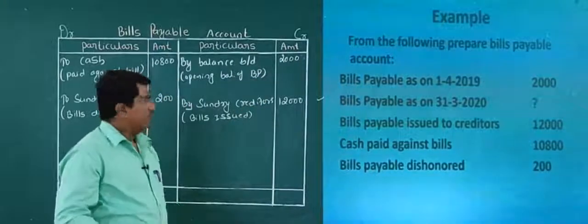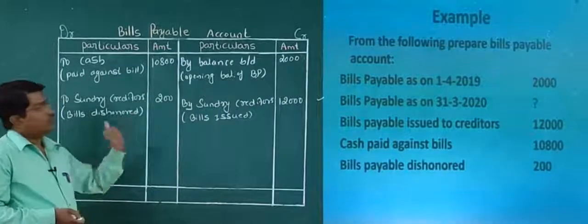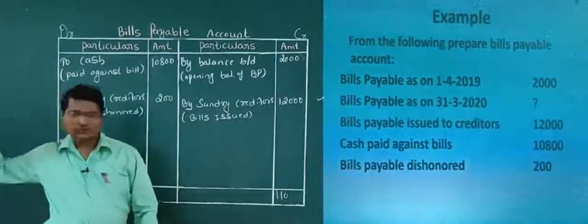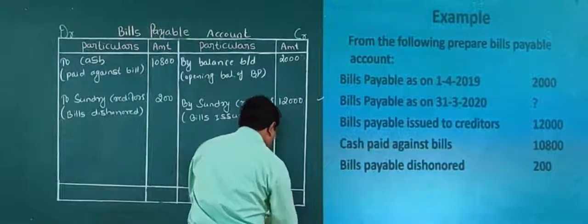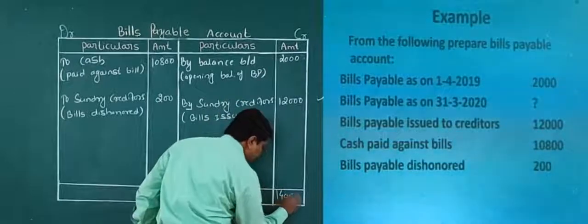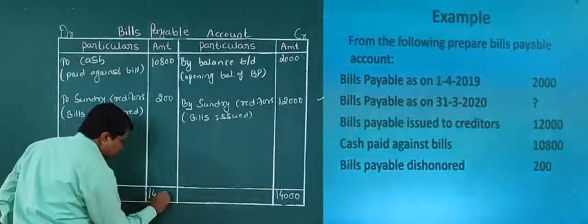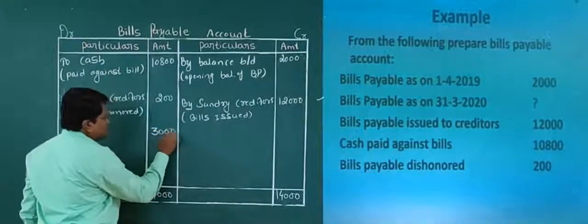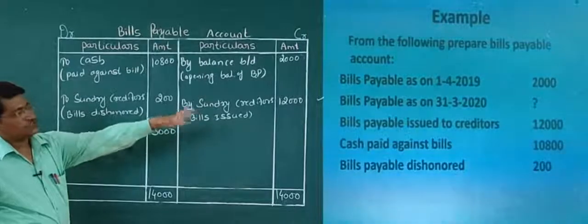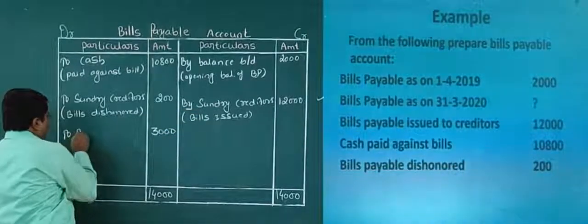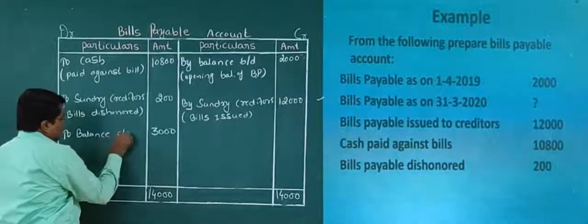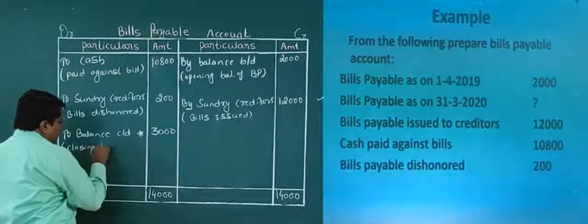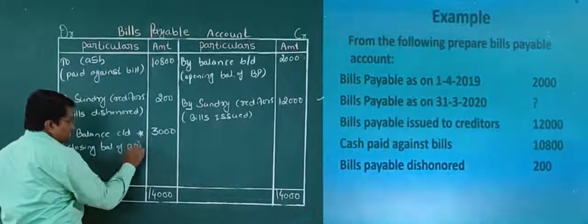So, 2000 plus 12,000 equals 14,000 on the credit side. On the debit side, 10,800 plus 2000 equals 11,000. Credit side is more — it is 14,000. So I write 14,000 as the total. 14,000 minus 11,000 comes to 3,000. This is nothing but bills payable as on 31st March 2020. So the entry name is: balance carry down. It is the closing balance of bills payable — 3,000.